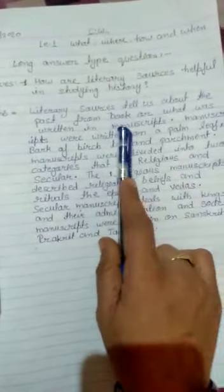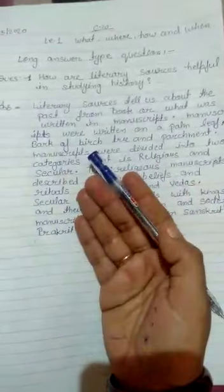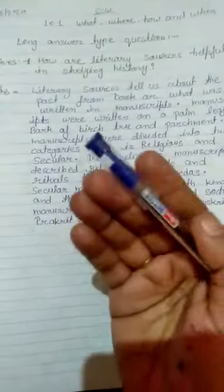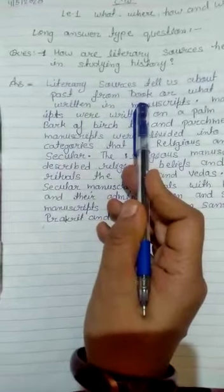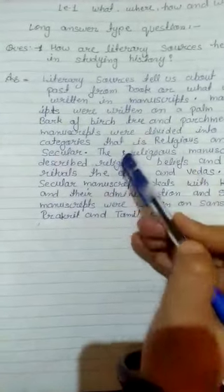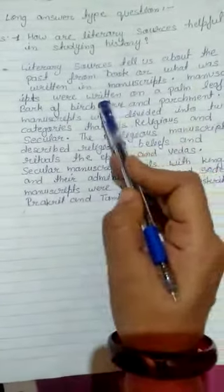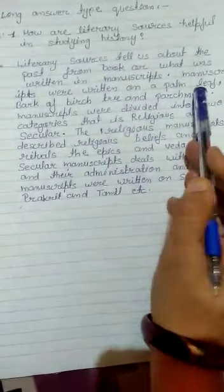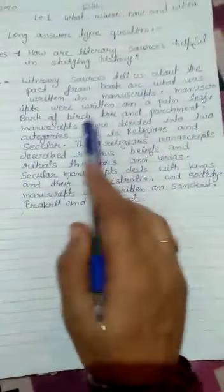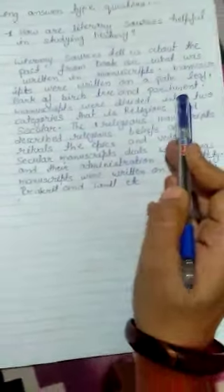Do you understand? Literary sources - how do you understand them? History was written in literature. Books and manuscripts are written literature. Manuscripts were written on palm leaves and parchment. Manuscripts were divided into two categories: religious and secular.